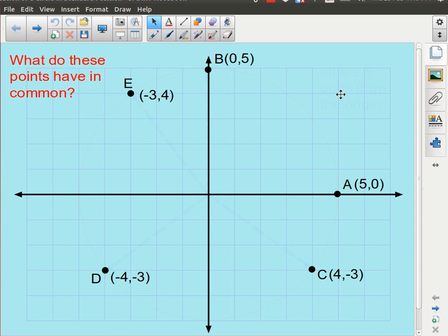So if we look at the simplest of these points, you might start off by looking at the points A and B. And what do they have in common? The x-coordinate is 5, the y-coordinate is 0, the x-coordinate is 0, the y-coordinate is 5.